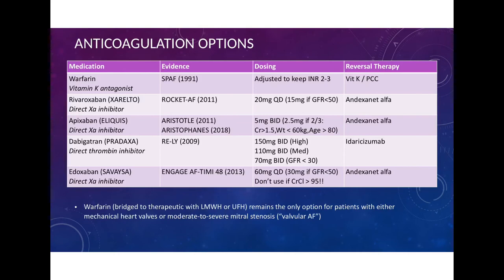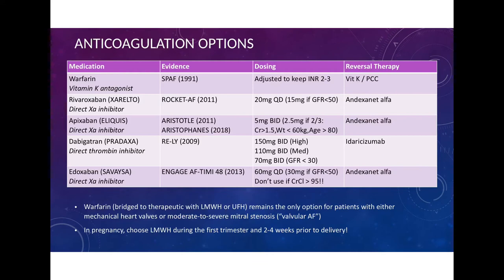Two important points: warfarin, bridged to therapeutic doses with low molecular weight heparin or unfractionated heparin, is the only option for patients with mechanical heart valves or moderate to severe mitral stenosis — in other words, valvular AFib. For pregnant women needing anticoagulation, use low molecular weight heparin during the first trimester and two to four weeks before delivery; warfarin can be used during the second and third trimester.